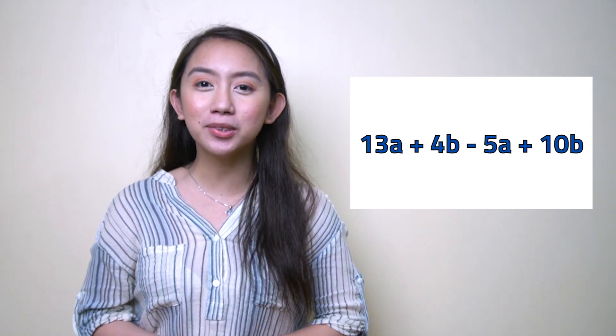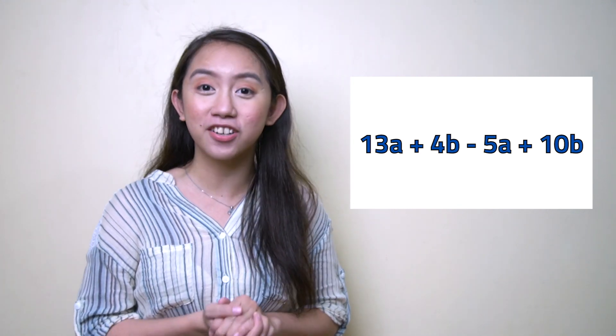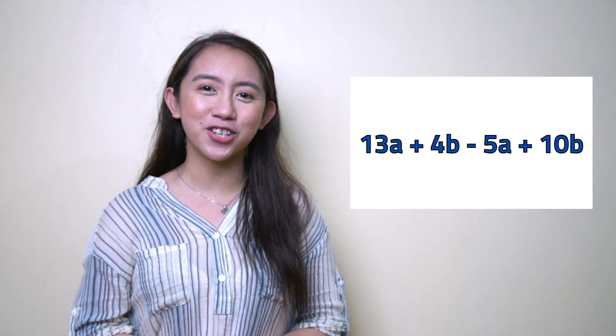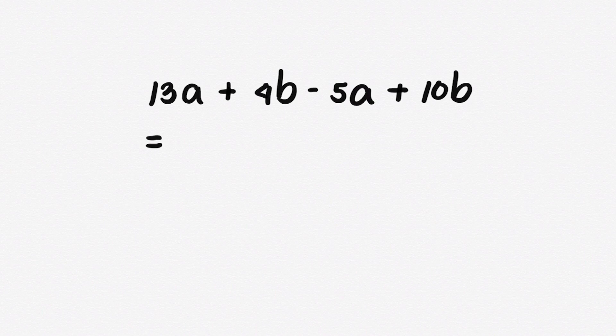Now that we know what radical expressions are, let's find out how to add and subtract radical expressions. Are you ready? Let's go! Let's review algebraic expressions first. In an algebraic expression, two terms are said to be similar if each term has exactly the same variable and degree. In this expression, the first and third terms are similar with the variable a in the first degree. The second and fourth terms are similar with the variable b in the first degree.